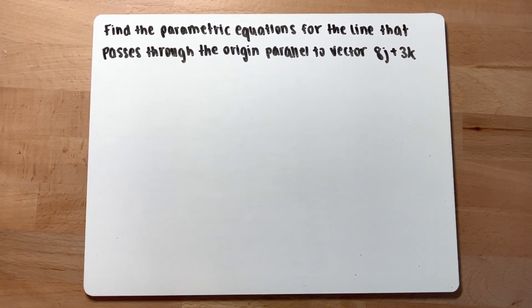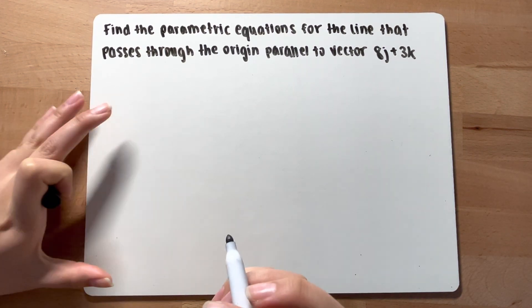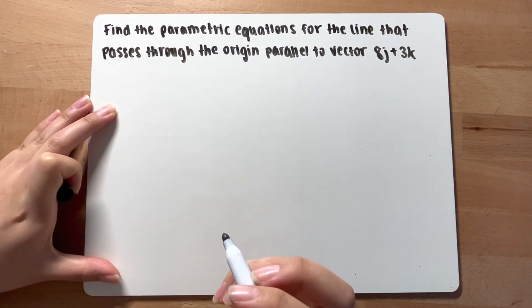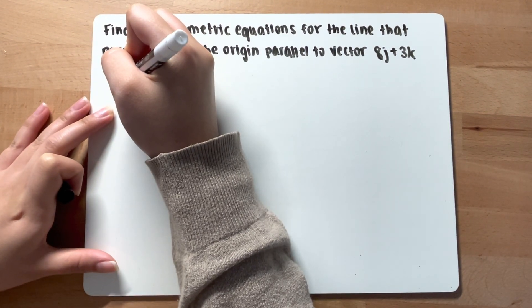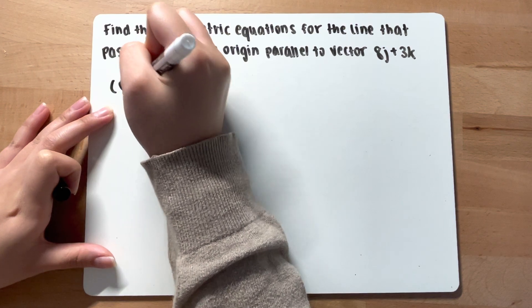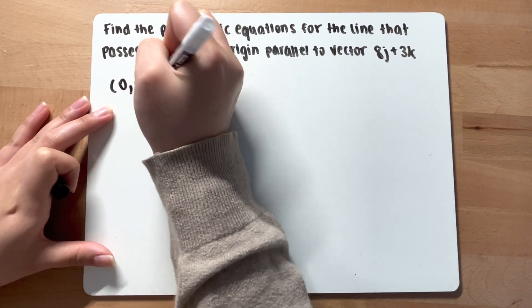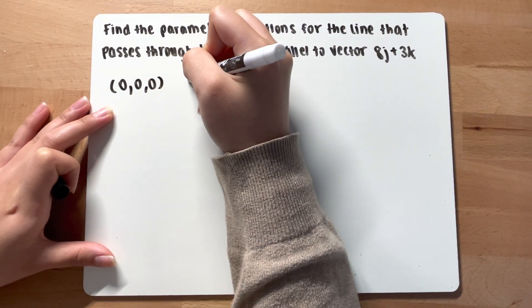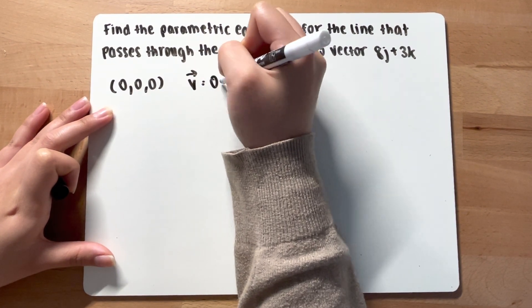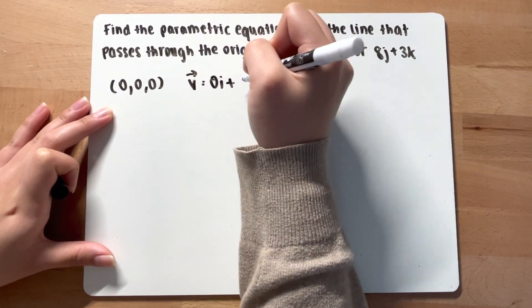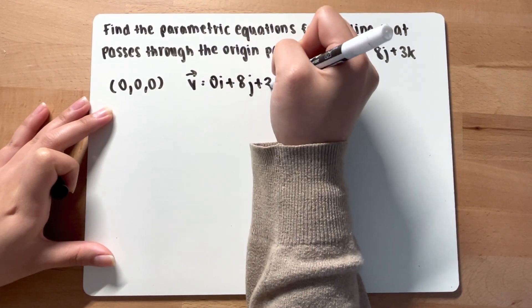To find the parametric equations for a line that passes through the origin and is parallel to the vector, you need to know what the point at the origin is. The origin is 0, 0, and 0. And we have this vector — let's call it vector v — which has 0i plus 8j plus 3k.